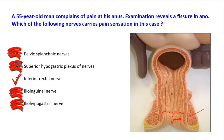They are also motor to the muscles of the anterior abdominal wall and supply the external genitalia, but they do not reach the perineum or supply the anal triangle of the perineum. So the correct answer is the inferior rectal nerve, because fissure in ano occurs in the lower part of the anal canal, which has somatic innervation.